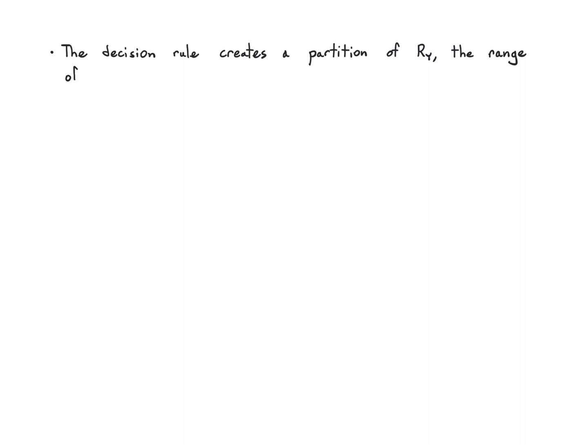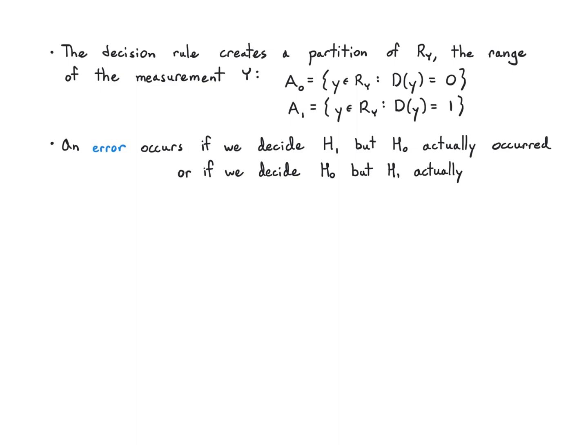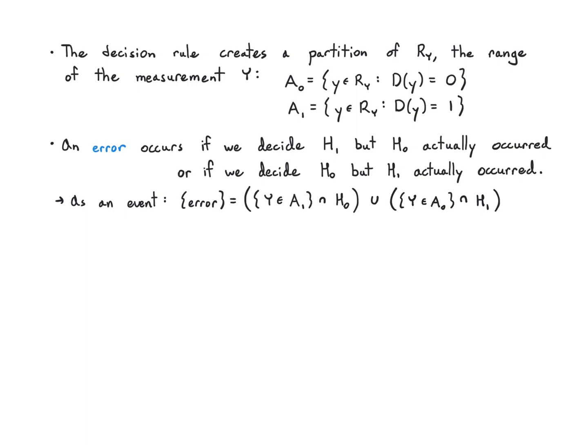We're not going to be able to make perfect decisions, so what we have to do is partition the range of y using our decision rule. There's going to be a region a0 where we decide 0 based on y, and a region a1 where we decide 1. An error occurs if we decide h1 but it was actually h0, or if we decide h0 but it was actually h1. An error is the union of y being in a1 when it's h0, or y being in a0 when it's h1.